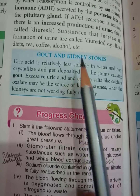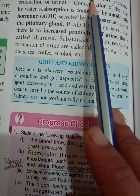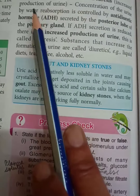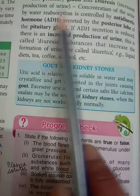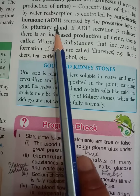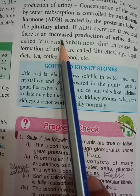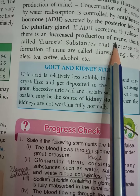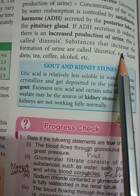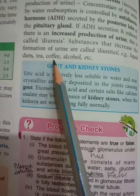Good morning students. We have covered composition of urine, regulation of urine output, pituitary gland, and diuresis. Concentration of urine by water absorption is controlled by antidiuretic hormone (ADH), secreted by the posterior lobe of the pituitary. If ADH secretion is reduced from the posterior pituitary, there is increased production of urine. This is called diuresis. Substances that increase urine formation are called diuretics — for example, liquid diets, tea, coffee, and alcohol.